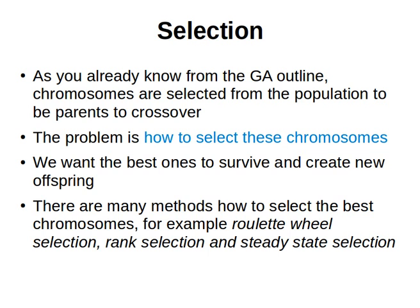In the previous video we spoke about encoding or representation for permutation problems. In this video we start talking about selection methods. As we know from before, when we explained the outline of the genetic algorithm, chromosomes need to be selected from the population to be parents — input to crossover — and we also spoke about mutation.